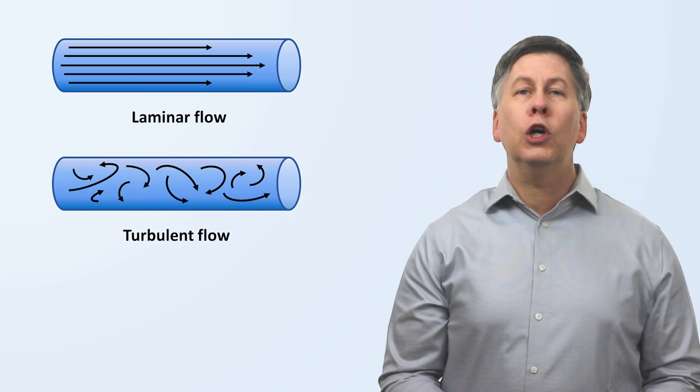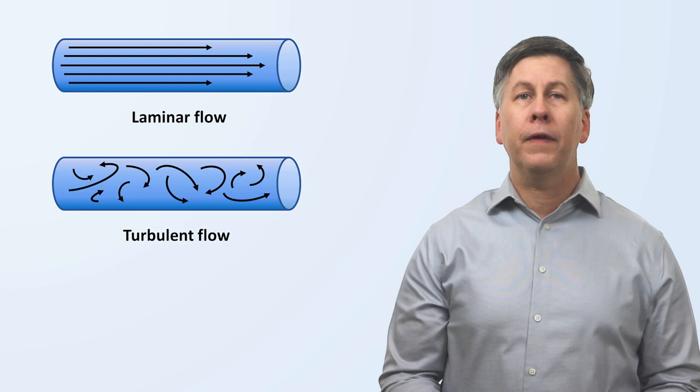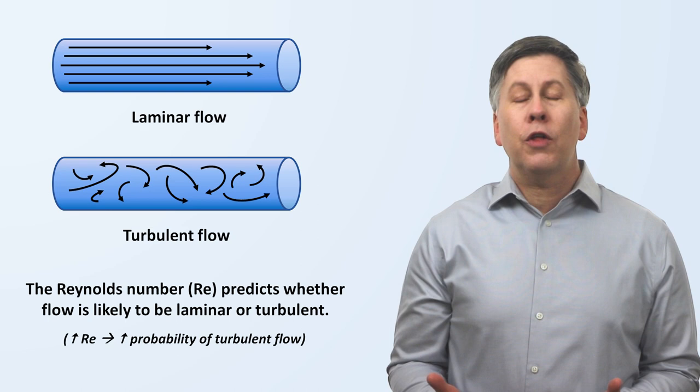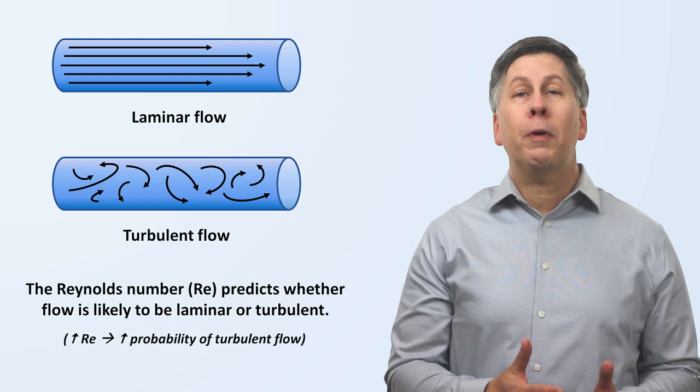To determine whether flow in a given situation is likely to be laminar or turbulent, we can calculate something called the Reynolds number, abbreviated Re. The higher the Reynolds number, the more likely flow will be turbulent. And I say more likely because there isn't just one discrete transition point where flow switches from fully laminar to fully turbulent, but rather there's a spectrum of fluid behaviors between those two states.